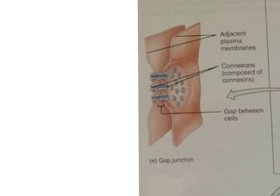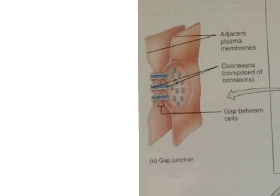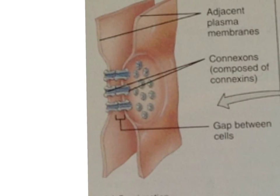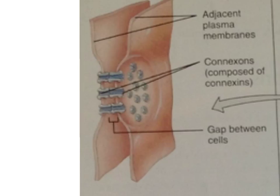The last cell junction to discuss are the gap junctions. Gap junctions are connections between adjacent cells that allow chemicals, such as small molecules like glucose and ions, to move from one cell to another via diffusion. Larger molecules like proteins are too big to move through the gap junctions — they simply can't fit. They consist of tube-like protein complexes called connexins that connect together the cell membranes of neighboring cells, forming a connecting tunnel or channel — known as a connexon — in the gap between adjacent cells.